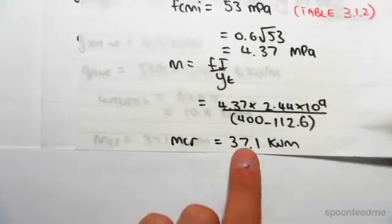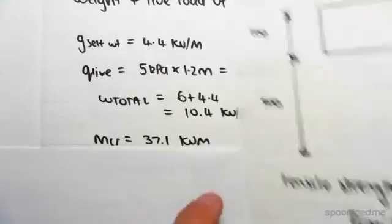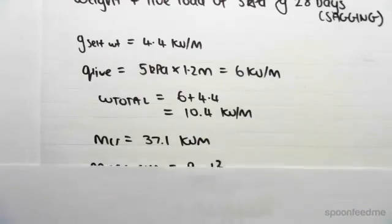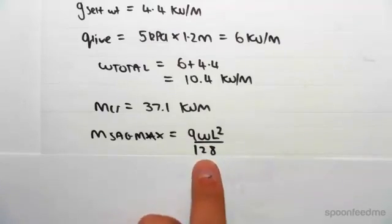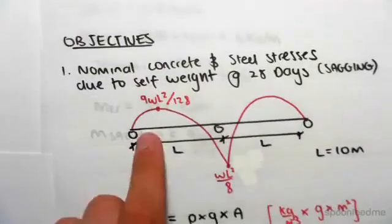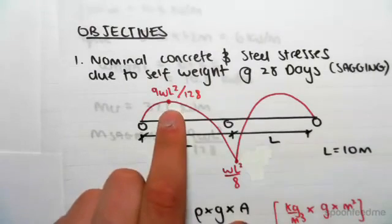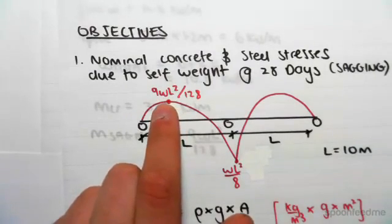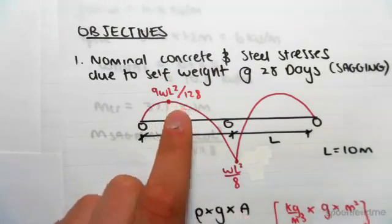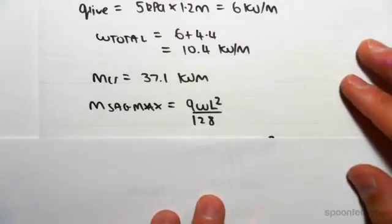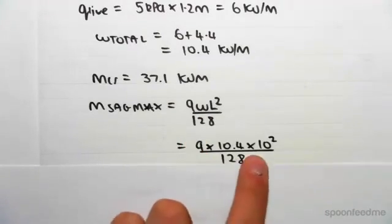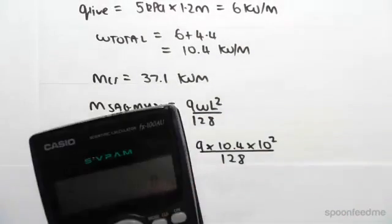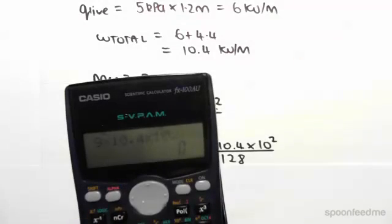The maximum sagging is 9WL squared on 128 - that's just straight from this diagram. Finding the new maximum sagging value, because our W's changed, so it's going to be 9 times 10.4 by 10 squared on 128. 9 by 10.4 by 10 squared divided by 128 gives us 73.1 kilonewton meters.